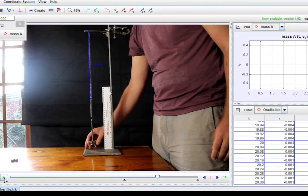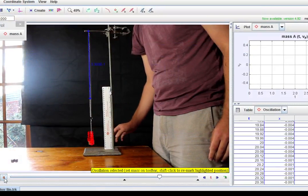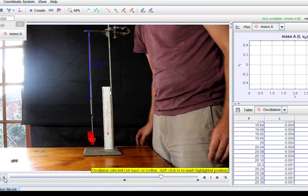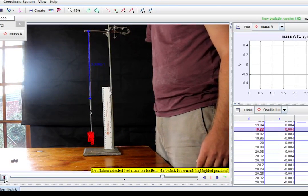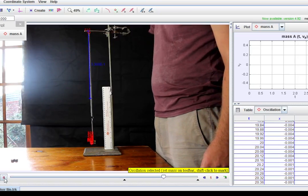The first thing I suggest is do an experiment. Videotape a mass on a spring oscillating up and down. You can then put this into some video analysis software and track its vertical position as a function of time.